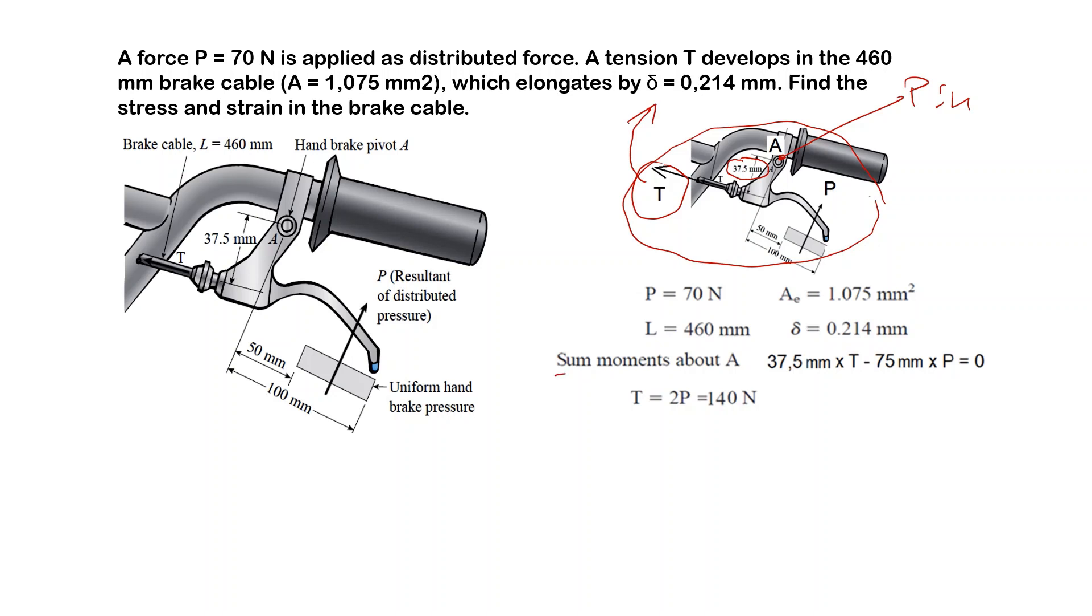If you take the sum of the moments about A, the tension in the cable applies a moment 37.5 times T. This force has a moment arm of 75 mm times P. This equation gives the relation between the tension in the cable and the applied P. We know that P is 70 N, so the tensile force in the cable is 140 N.